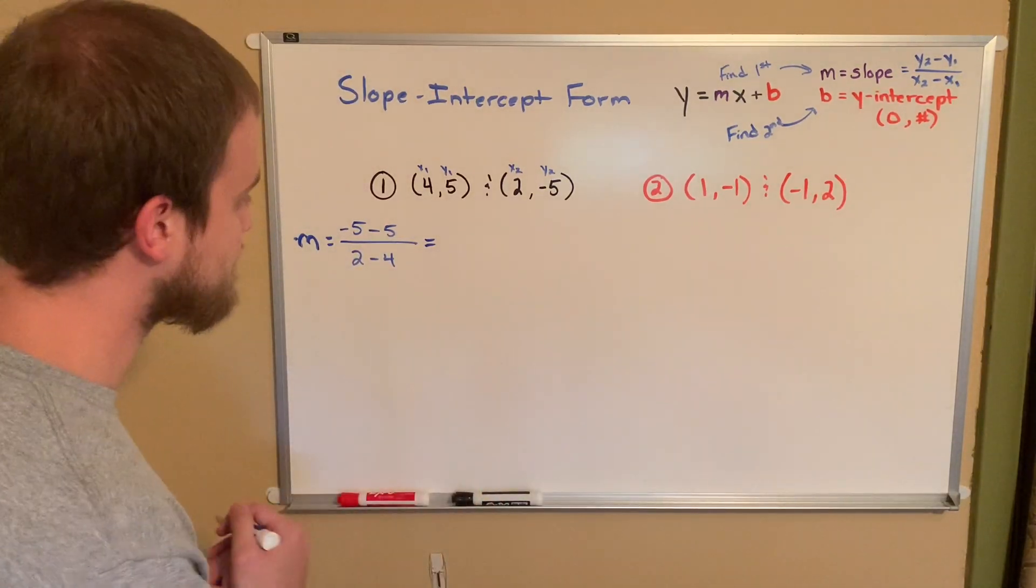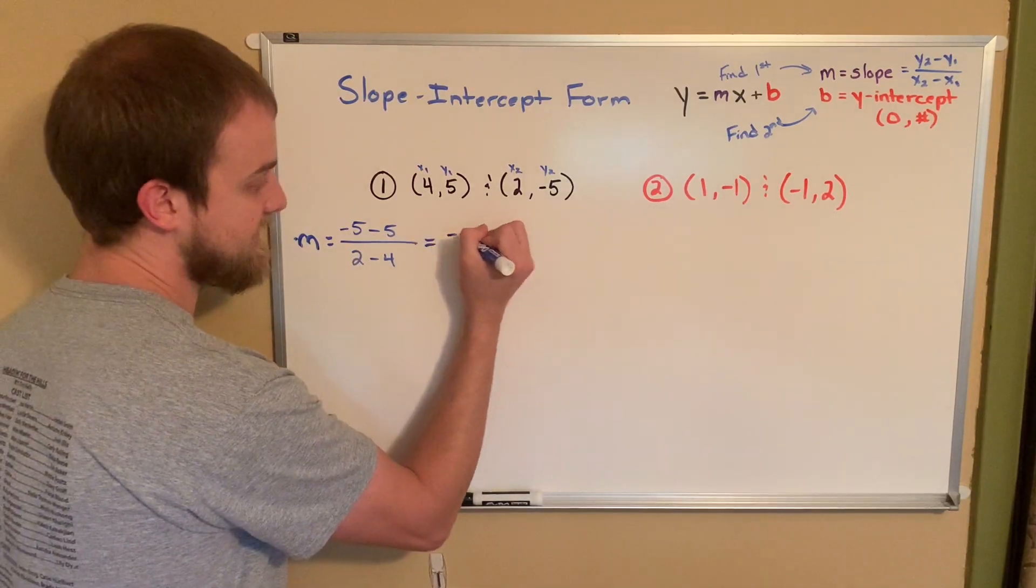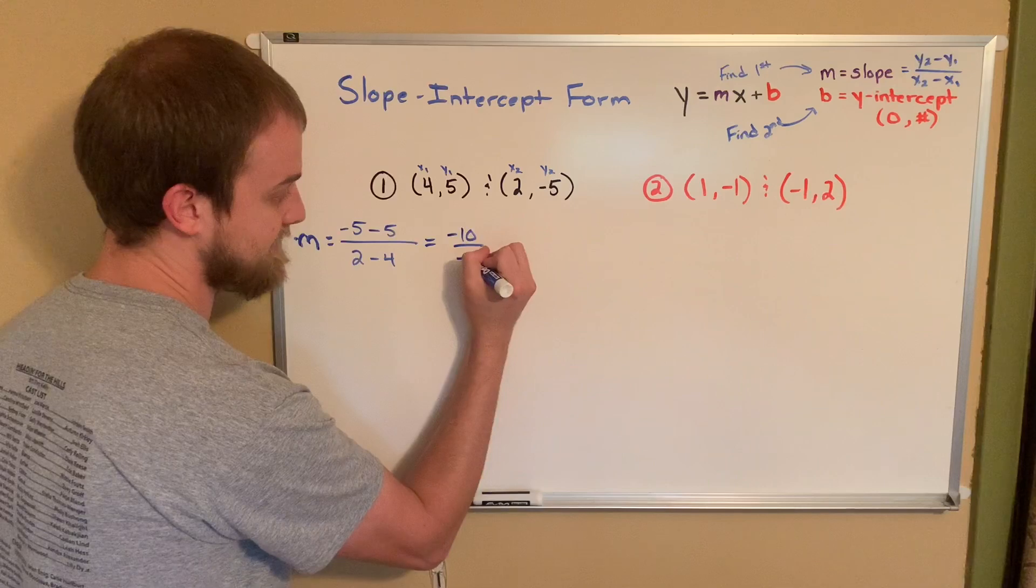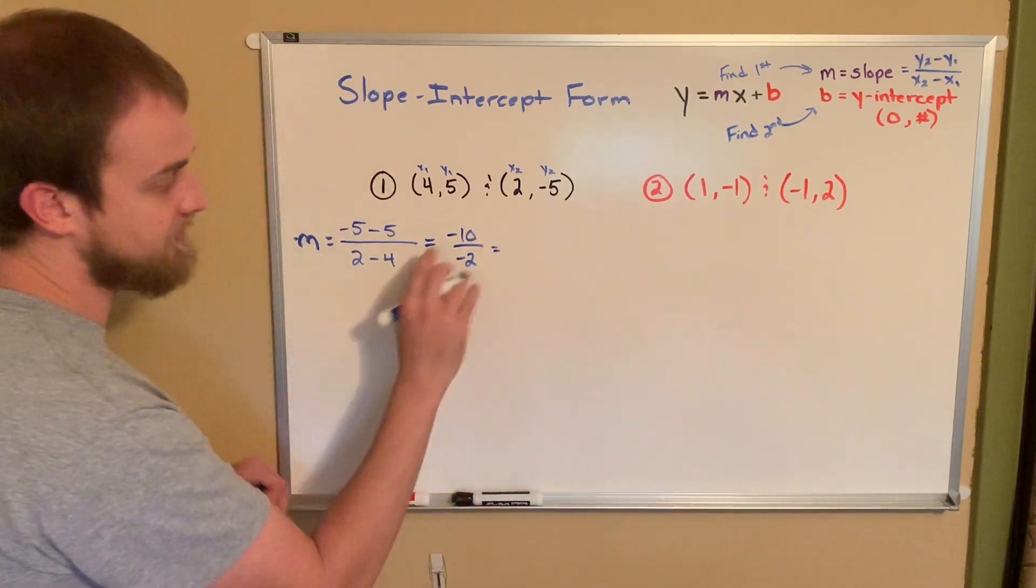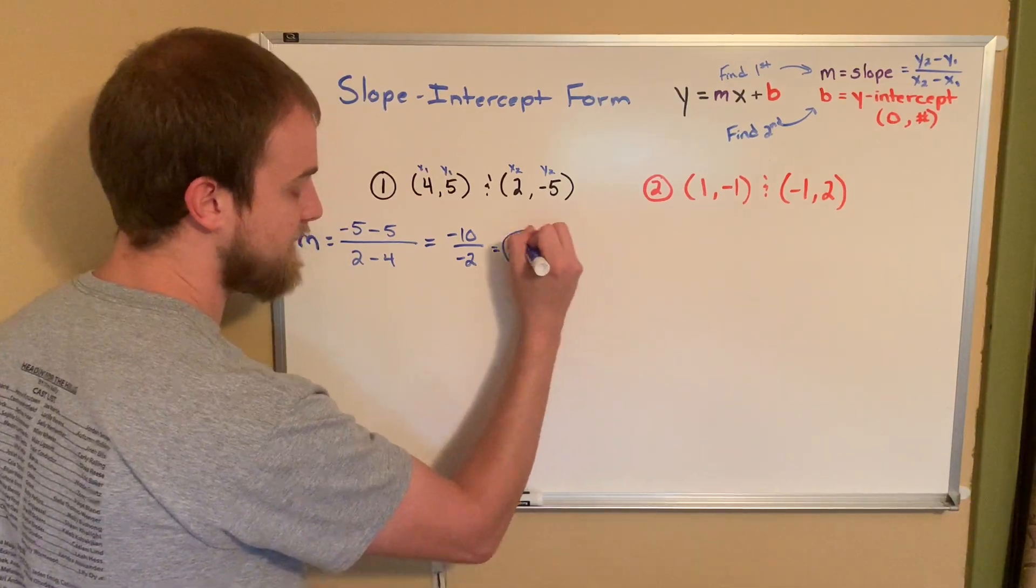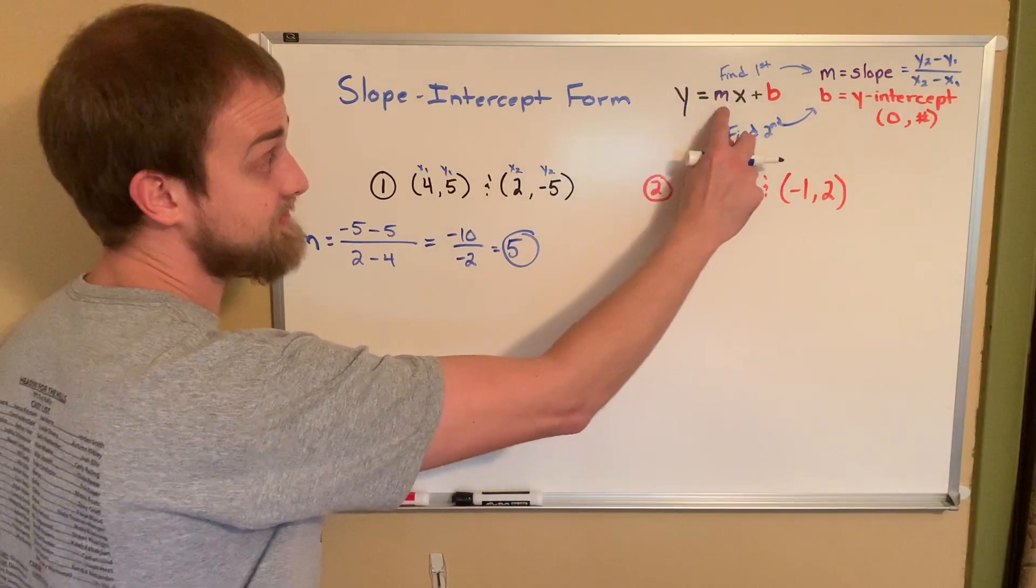So, negative 5 minus 5 over 2 minus 4. And we'll simplify this. This is our slope, this is our m. This will be our coefficient of our x once we have it. Well, negative 5 minus 5 is negative 10 over 2 minus 4 is negative 2. And if I simplify negative 10 divided by negative 2, it should give me positive 5.